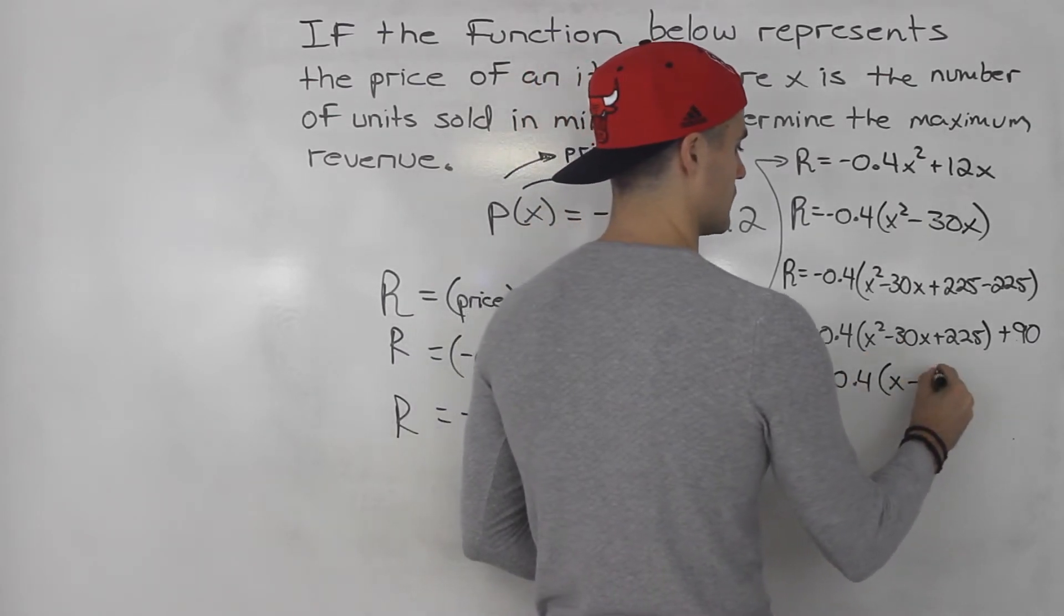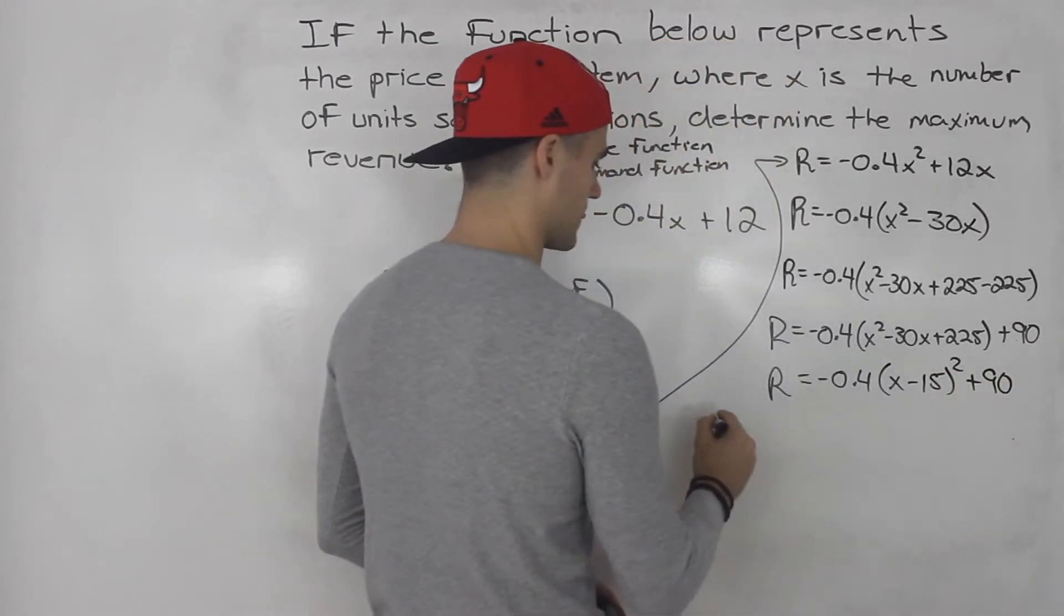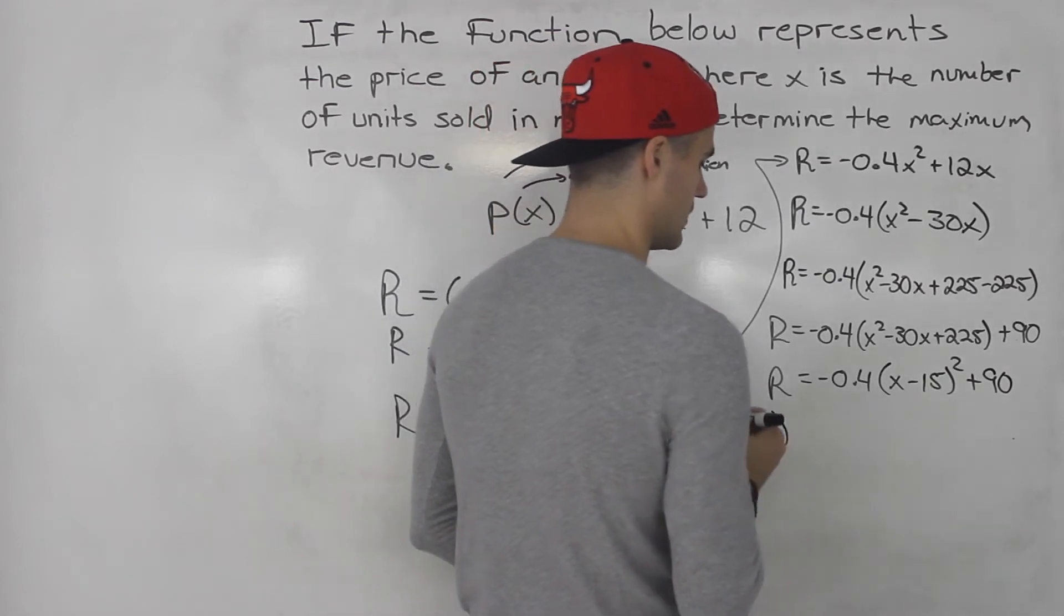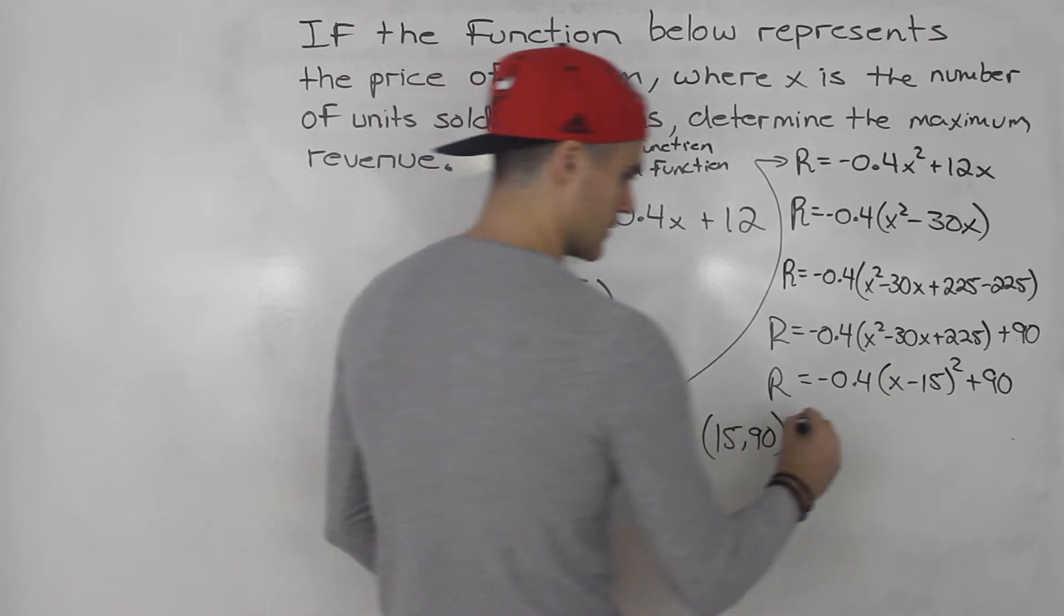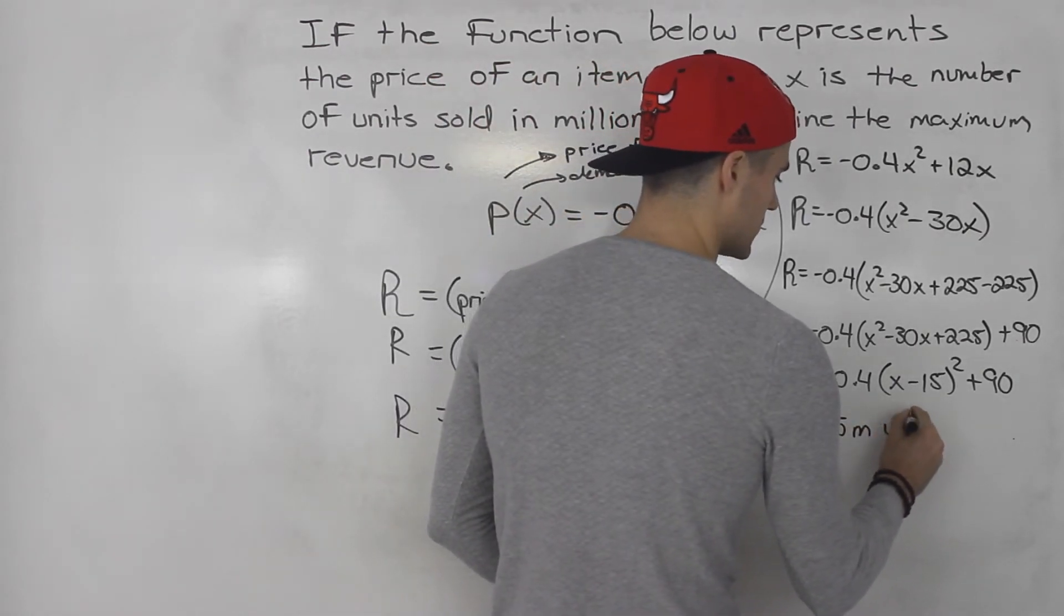And then this here, this bracket is going to factor into x minus 15 squared plus 90. Vertex here is 15 and 90. So this 15 million units sold gives us a max revenue of 90 million.